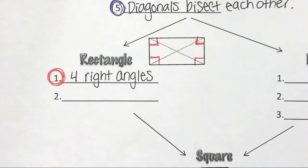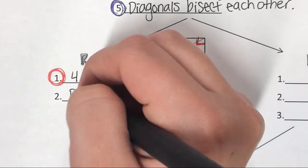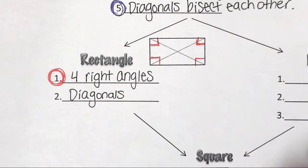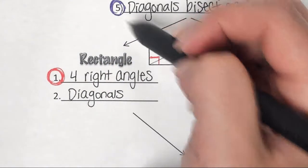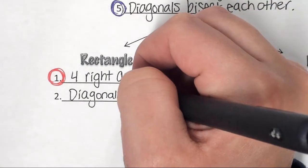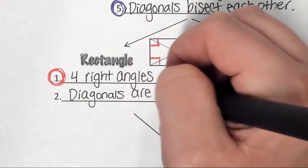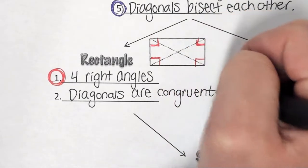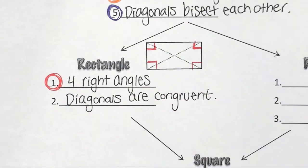They won't have to memorize them — you'll be given them. Your second property is that your diagonals — remind me what a diagonal is. They cross through your shape, so this is a diagonal, this is a diagonal. In a rectangle, your diagonals are congruent.